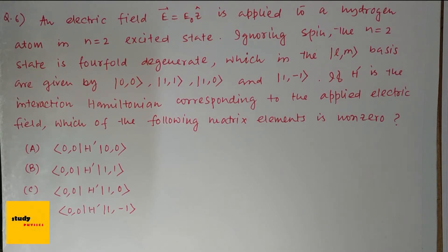An electric field E equal to E0z cap is applied to a hydrogen atom in n equal to 2 excited state. Ignoring spin, the n equal to 2 state is 4 fold degenerate, which in the LM basis are given by 00, 11, 10 and 1-1.